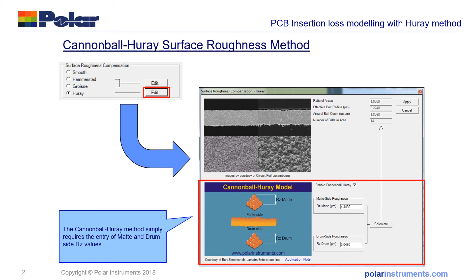which is a simple method of pre-processing the Rz mat and Rz drum side roughness of the copper surface, and converting that into the parameters for Hurae, which gives you the best of both worlds and is a very good estimation of the correct numbers.